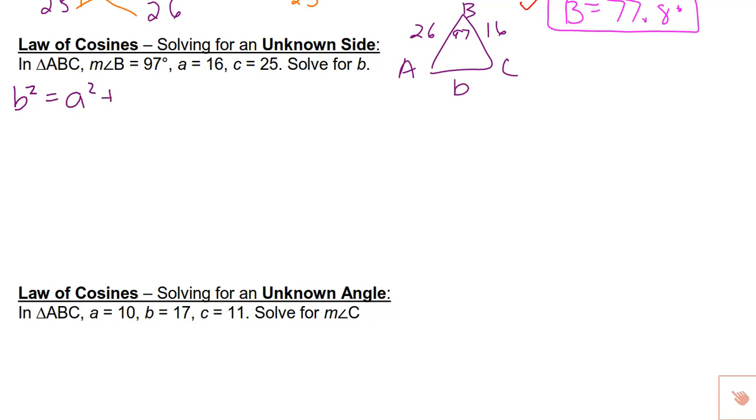And just like with law of sines, I suggest you write it out. Makes it much easier when you're substituting in, so you don't have so much to hold in your head. For substituting, just put in what you are given. And honestly, at this point, you could just plug this directly into your calculator. So you could do 16 squared plus 25 squared minus 2 times 16 times 25 times cosine 97. Enter.